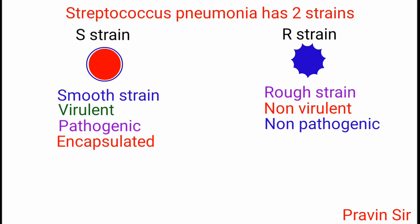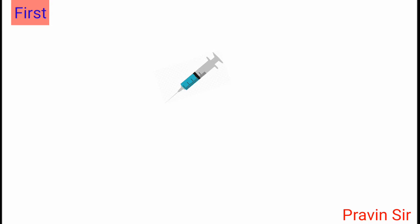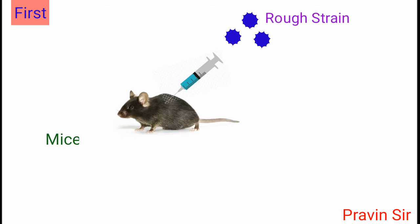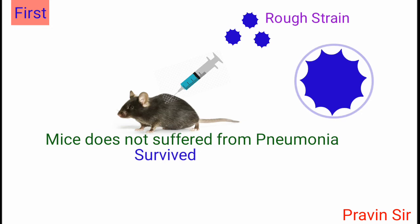Griffith conducted four experiments on this bacteria. First, he injected the rough strain bacterium into mice. The mice did not suffer from pneumonia and survived. The reason was that R strain does not have a polysaccharide coat, and so the immune system of the mice destroyed the R strain.